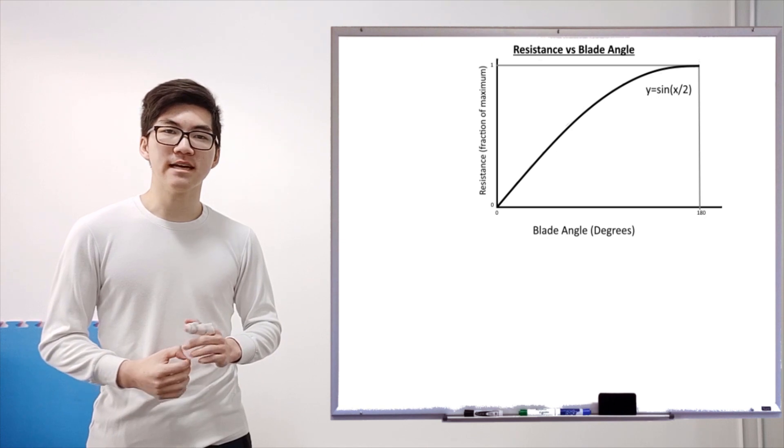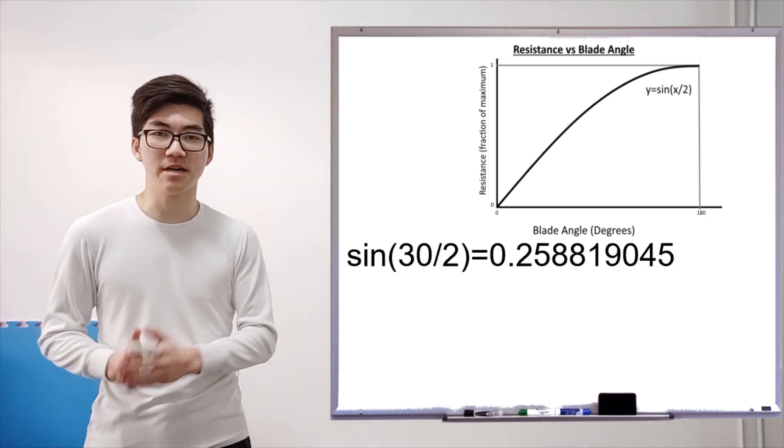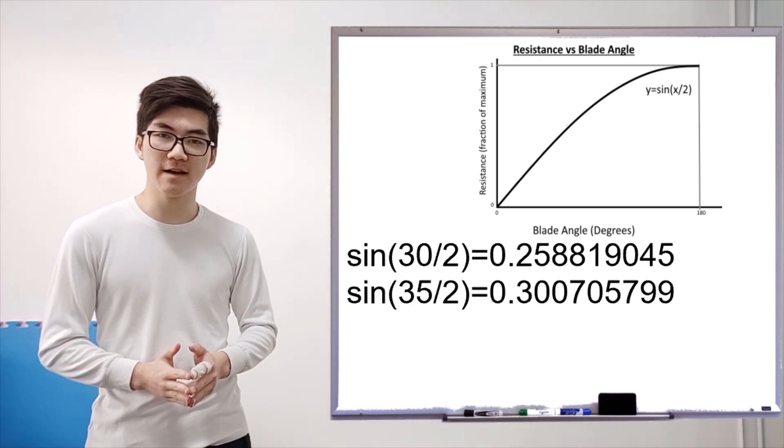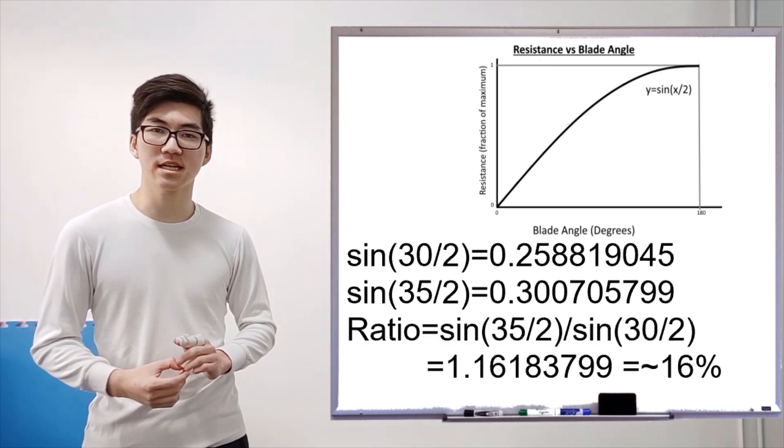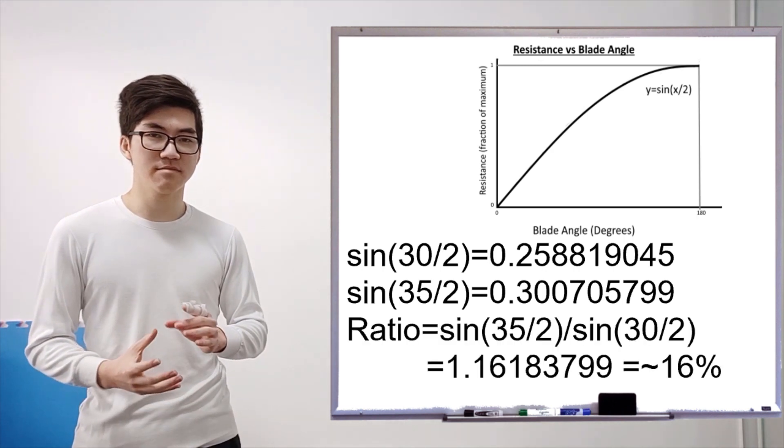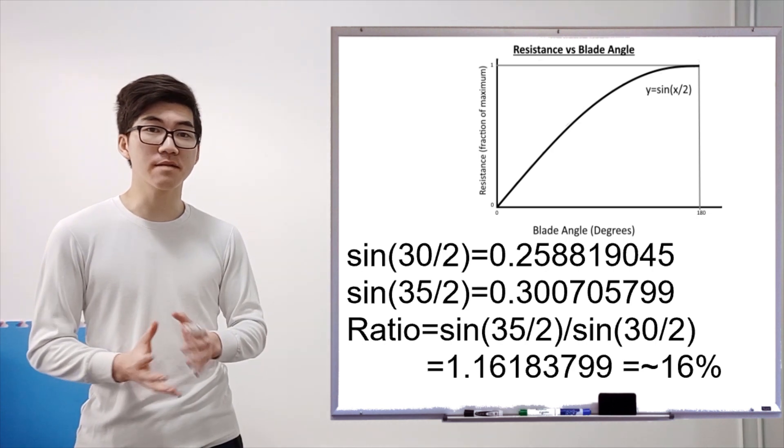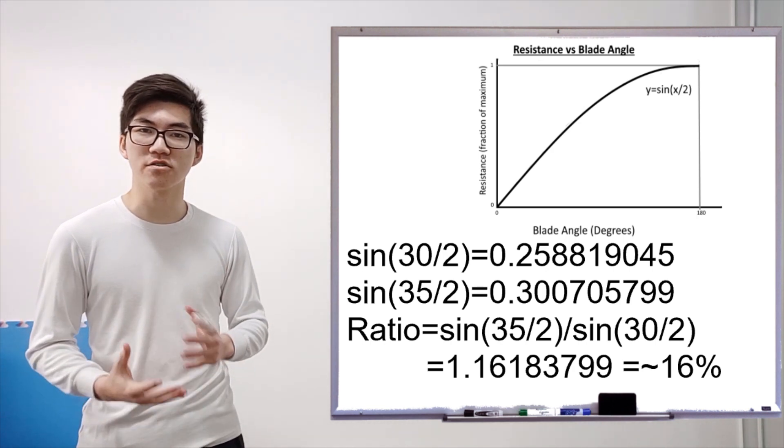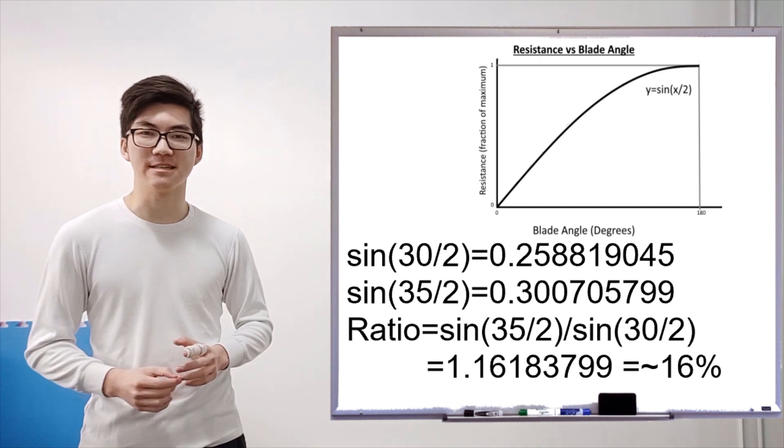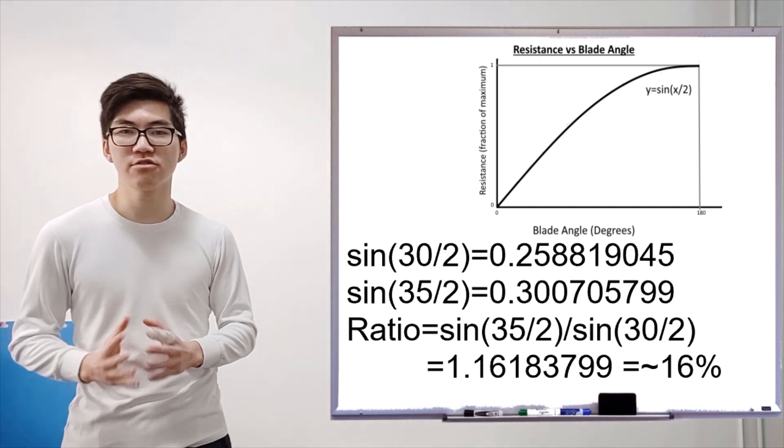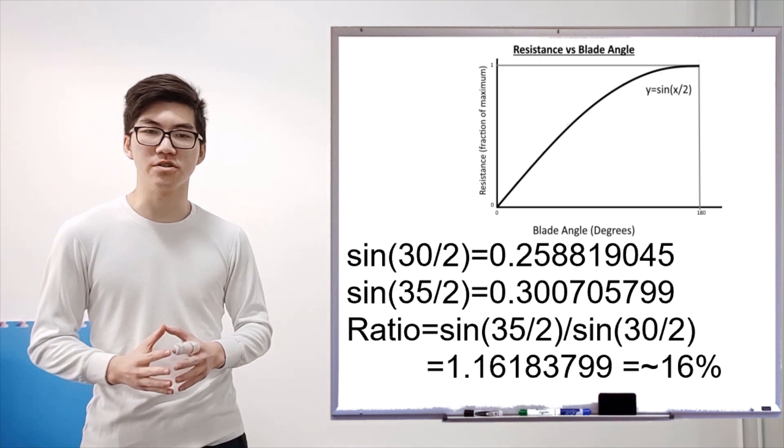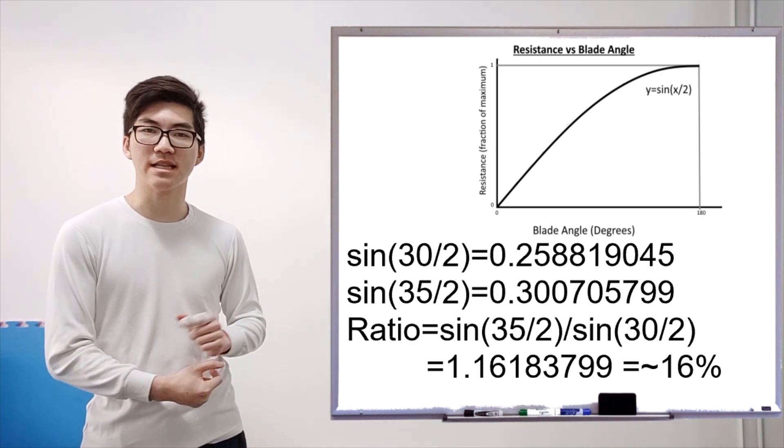Now with this sine curve, if we take the difference between a cutting angle of 30 degrees and a cutting angle of 35 degrees, then we get a difference of 16% in the cutting ability. It's present, it's something, but it's not double, it's not triple, it's 16% difference in resistance. So the answer is yes, secondary beveling does reduce your cutting ability, but it's not by that much.